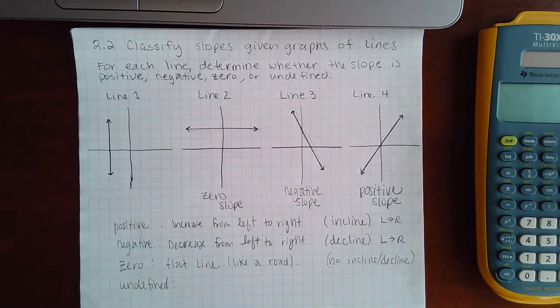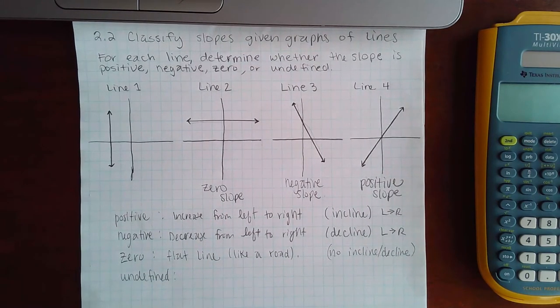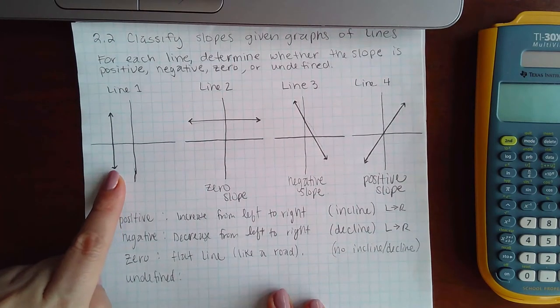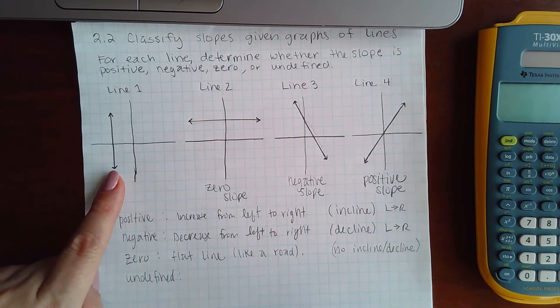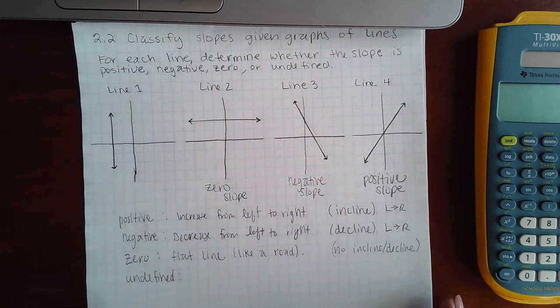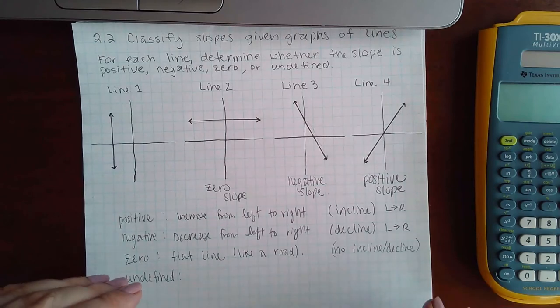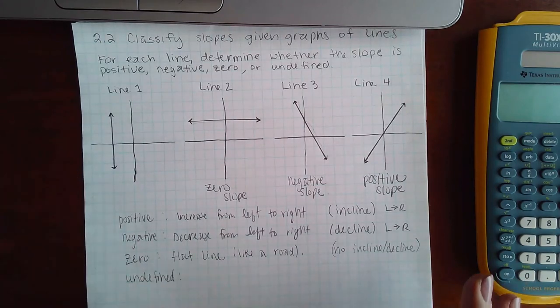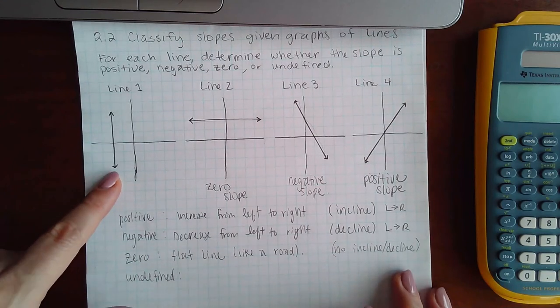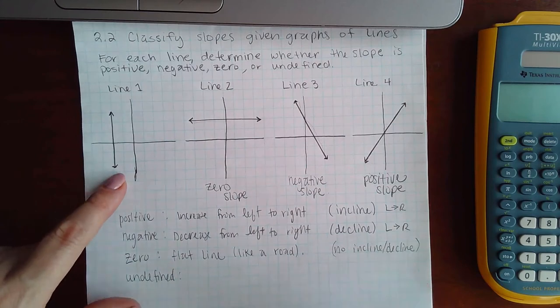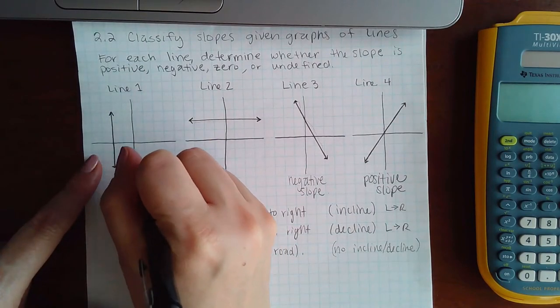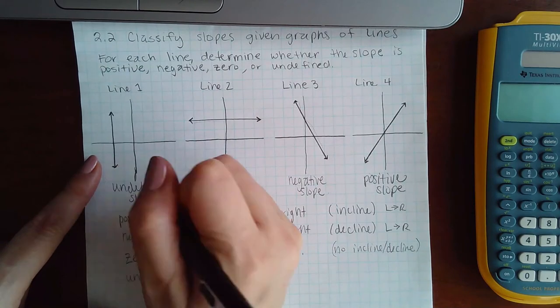Now undefined is different. You cannot walk along a line that has undefined slope. It looks more like a wall versus a road. It's not the sidewalk inclining or declining or flat - this one is more like a wall you cannot walk along. So this one has an undefined slope.